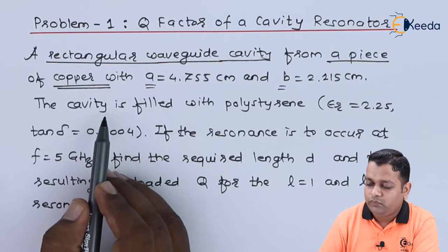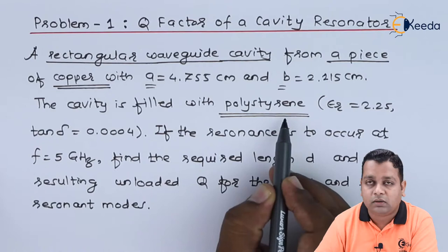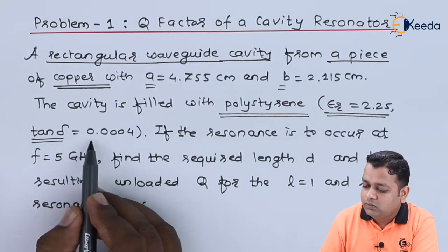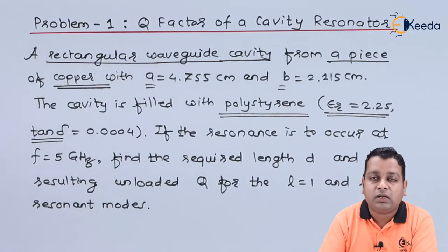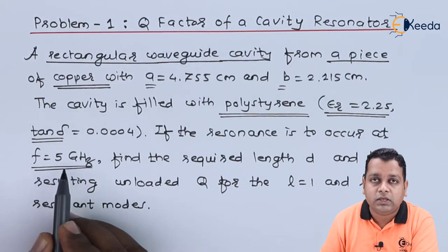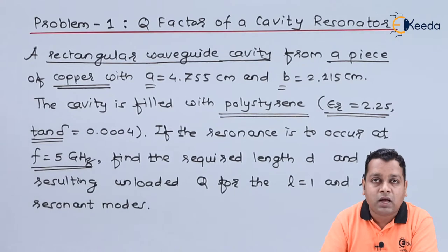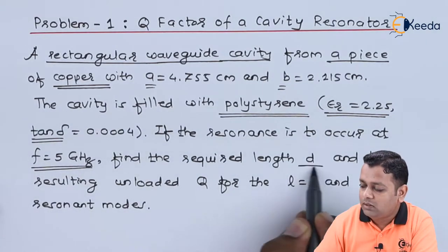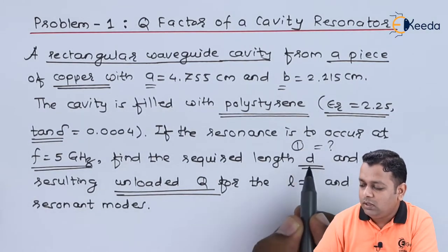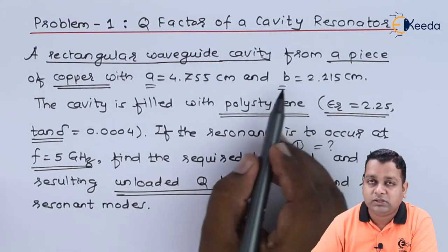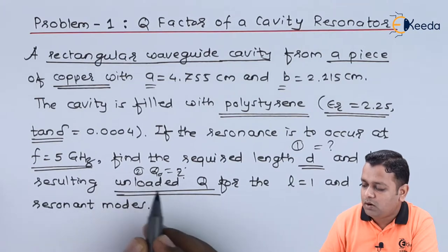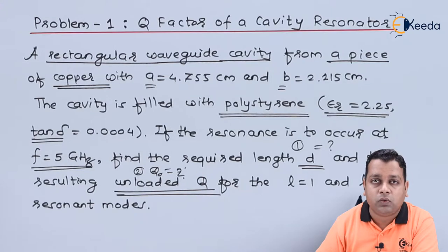This cavity resonator has the cavity filled with a dielectric material with relative dielectric constant 2.25 and loss tangent 0.0004. Such a rectangular cavity resonator is operated so that the resonance condition occurs at an operating frequency of 5 gigahertz. What is asked is to find the value of required length small d and the resulting unloaded quality factor Q0. Both values need to be determined for resonant modes l equal to 1 and l equal to 2.